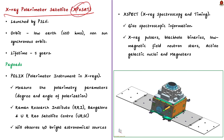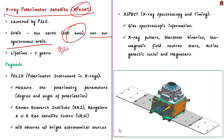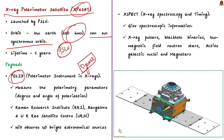XPoSat will be placed in a low Earth non-sun-synchronous orbit at 650 kilometers by ISRO's workhorse PSLV. XPoSat will be India's first dedicated polarimetry mission. The mission has a lifetime of five years. The satellite will carry two scientific payloads: the X-ray polarimeter (in short, POLEX) and the X-ray spectroscopy and timing instrument (in short, XSPECT).